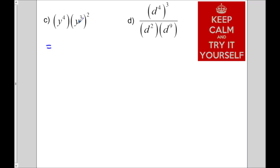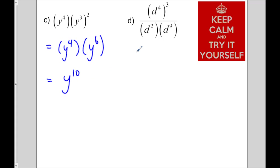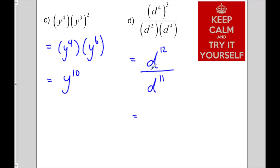For the harder problems: we need to deal with the exponent first before multiplying. Y to the 4 stays on its own first. We deal with y to the 3 squared — multiply those exponents to get y to the 6. Then the two powers are multiplying, so we add exponents: y to the 10. The last one: simplify numerator and denominator separately. The numerator is a power raised to an exponent — d to the 4 times 3 is d to the 12. The denominator has multiplying powers — d to the 2 plus 9 is d to the 11. Dividing: 12 minus 11 is 1, giving d to the 1, which we just write as d.